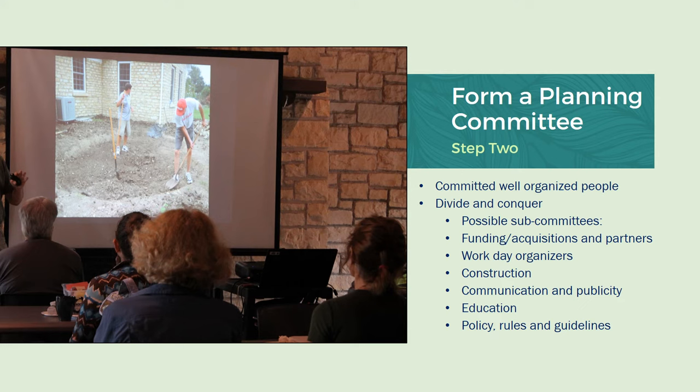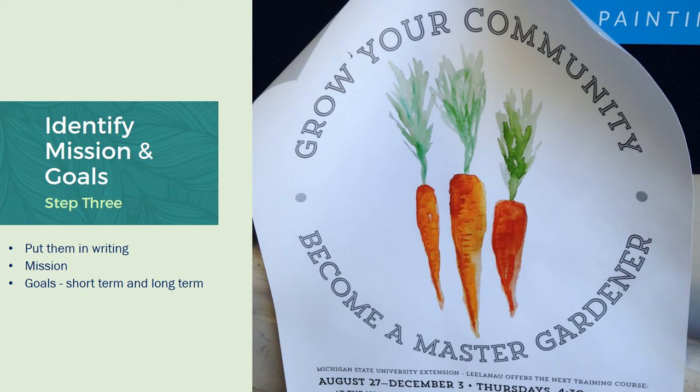Policy, rules, and guidelines — you'll want to have someone willing to draft these up and have them on paper in writing so everybody is clear. Identifying mission and goals is step three. Put these in writing and always look back to them to keep you on track. Having a simple mission statement is very helpful.